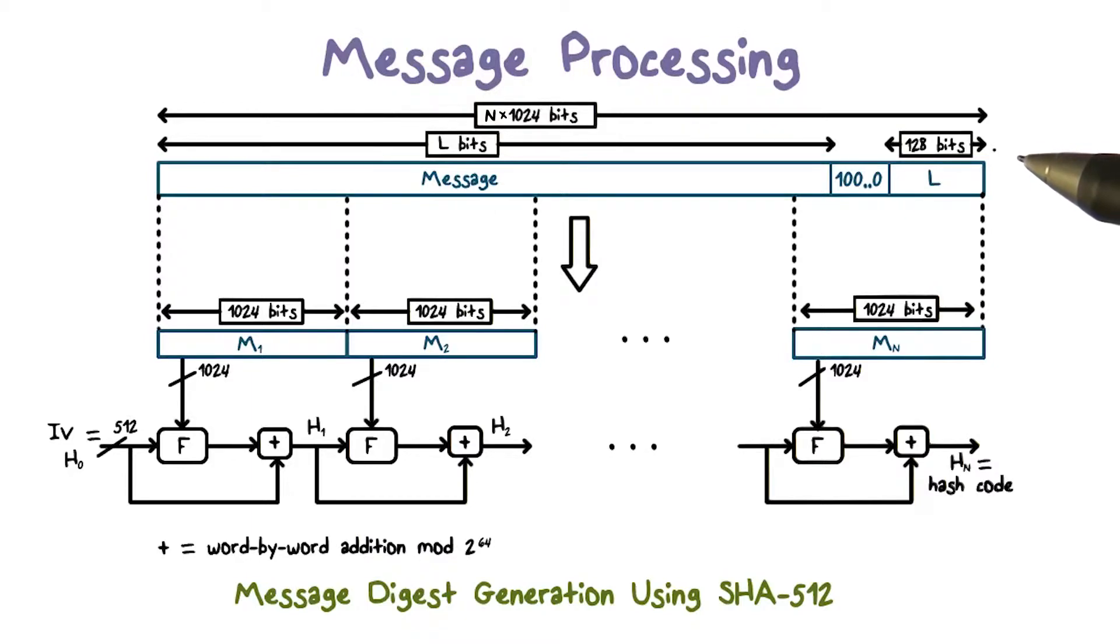This figure shows the overall processing of a message to produce a hash value. The first step is padding, so that the message is a multiple of 1024 bits. Because the message is going to be processed block by block and each block has 1024 bits. The padding bits are appended to the last block of the message.